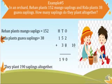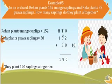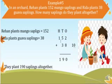Then we start addition from the 1's place. There are 2 digits: 2 and 8. When we add 2 and 8 our sum is 10. We can't write a number greater than 9 in the 1's column, so we write 0 in the 1's column and 1 we take as a carry and put in the 10th column. 5 plus 3 plus 1 carry equals 9 in the 10th column. Now there is only 1 in the 100th column with no other digit, so we write 1 in the 100th column only. So 152 plus 38 is equal to 190.